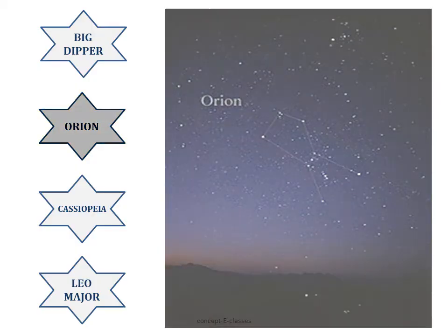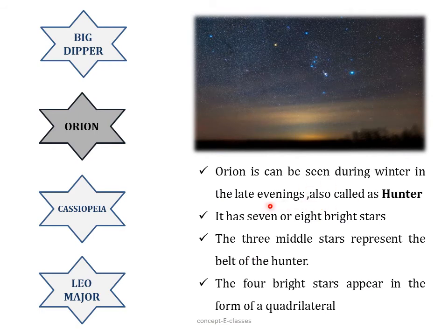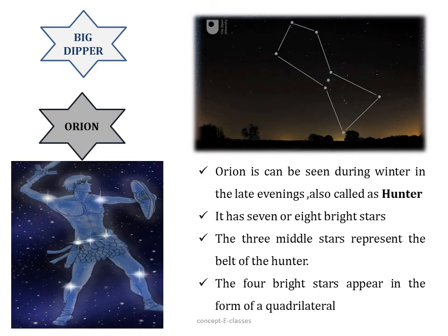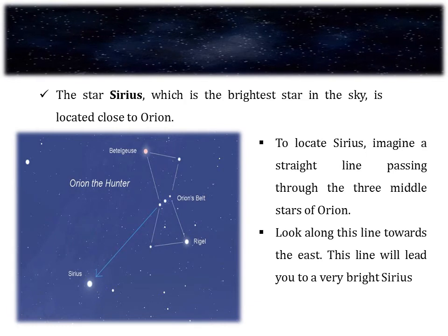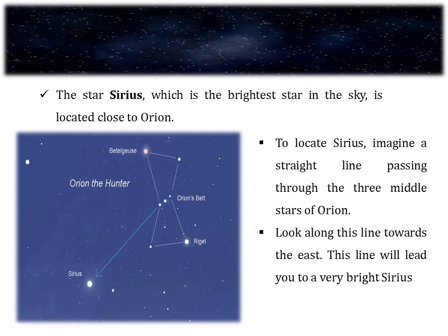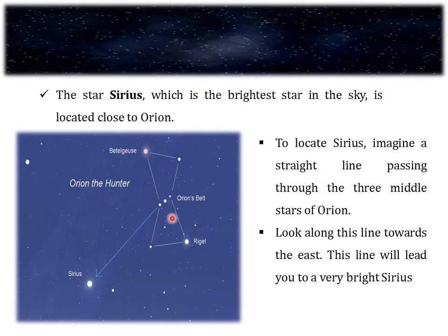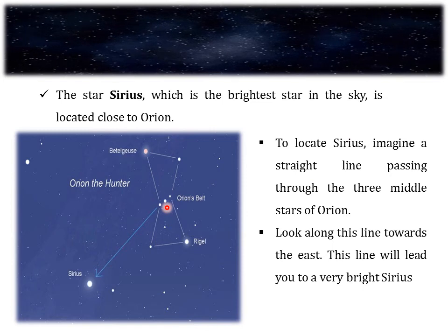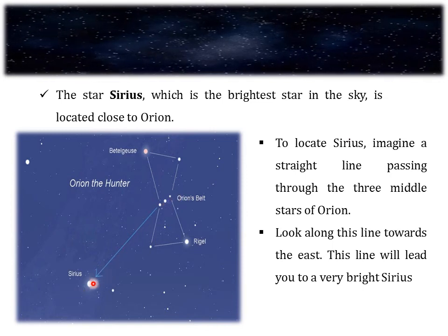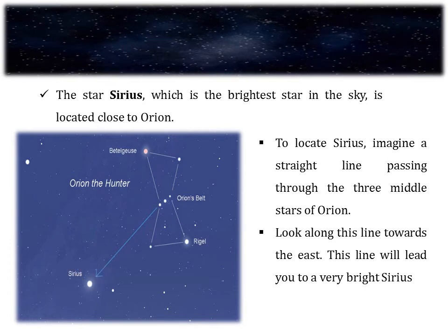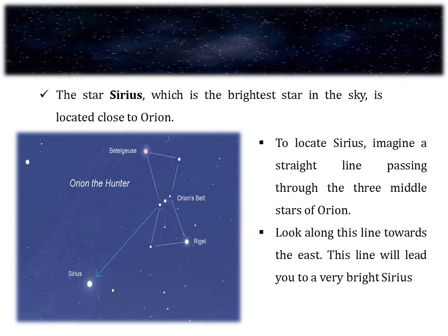The next constellation is Orion, which can be seen during winter in the late evenings and is also called the hunter constellation. It is one of the most magnificent constellations in the sky and has seven or eight bright stars. The three middle stars represent the belt of the hunter, and four bright stars appear in the form of a quadrilateral. Just as we located the pole star using Ursa Major, we can locate the brightest star, Sirius, using Orion: draw an imaginary line through the three middle stars of Orion and look along it towards the east — this leads to Sirius.